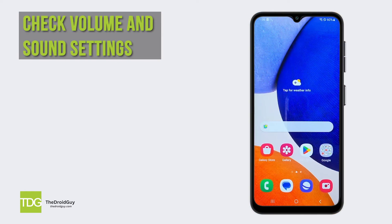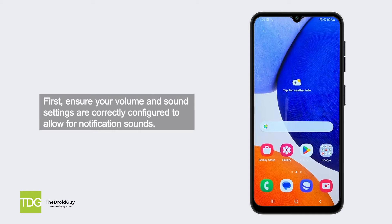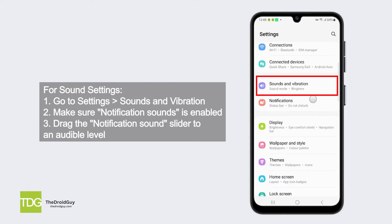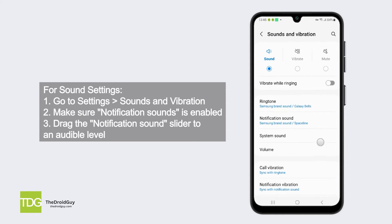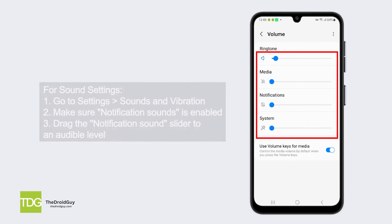Check volume and sound settings. First, ensure your volume and sound settings are correctly configured to allow for notification sounds. For sound settings, go to Settings, then Sounds and Vibration. Make sure notification sounds is enabled, and drag the notification sound slider to an audible level.